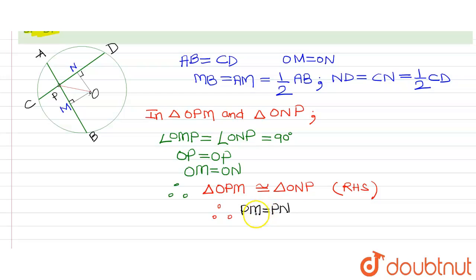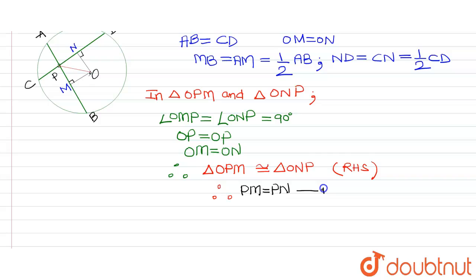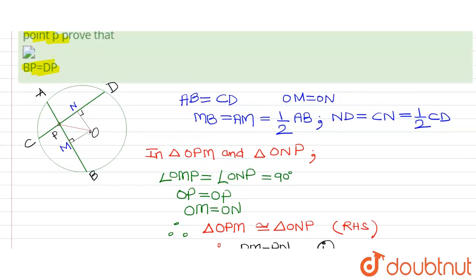Now we can add in this equation, equation number 1. Suppose I am adding PM with MB. So we have MB plus PM equals ND plus PN since MB equals ND. Now as we can see from the figure, MB plus PM this will give you BP and ND plus PN will give you DP. Hence proved.